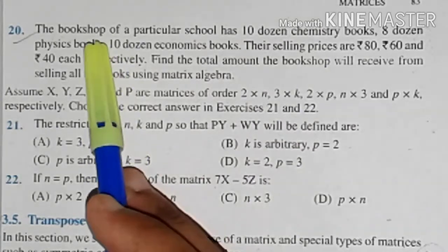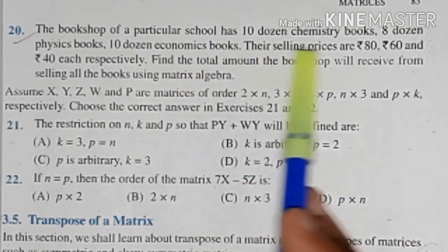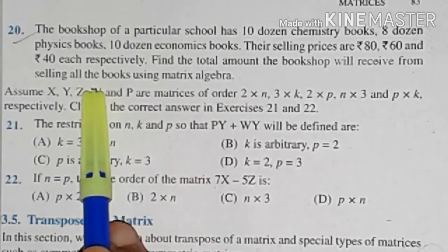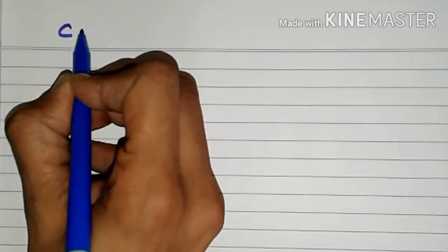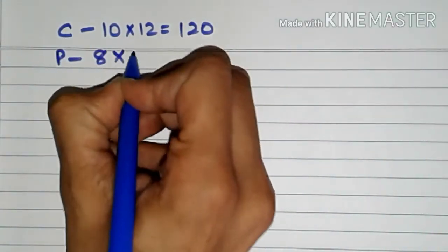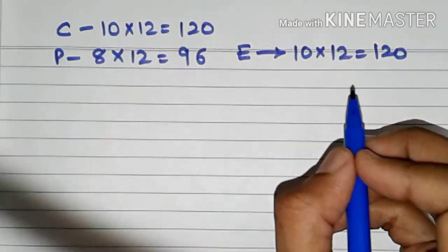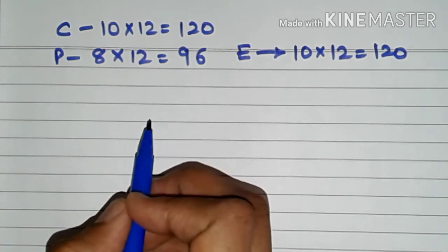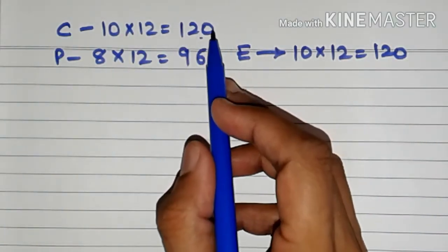Question number 20: The bookshop of a particular school has 10 dozen chemistry books, 8 dozen physics books, and 10 dozen economics books. The selling prices are 80, 60, and 40 respectively. We have to find the total amount the bookshop will receive from selling all the books using matrix algebra. So: 10 dozen chemistry books is 10 times 12 equals 120 books; 8 dozen physics books is 96 books; 10 dozen economics books is also 120. Note that the word dozen is written — we must multiply by 12.